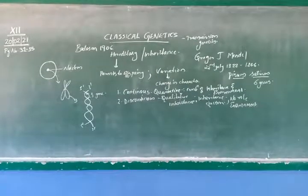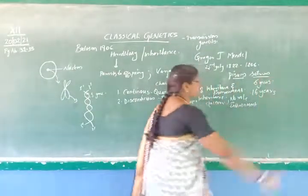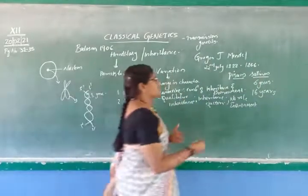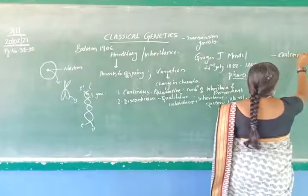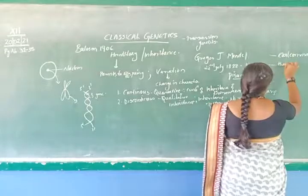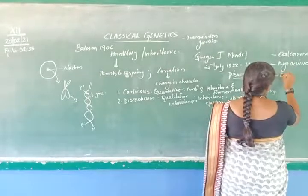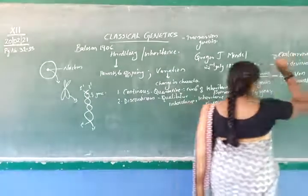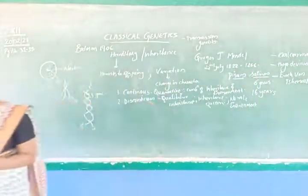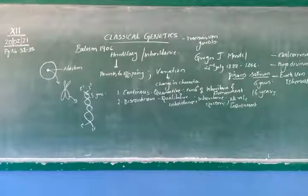After his death, 16 years later, three scientists rediscovered Mendel's work: Carl Correns, Hugo de Vries, and Erich von Tschermak. Today we are studying genetics related to Mendel largely due to the contribution of these three scientists.